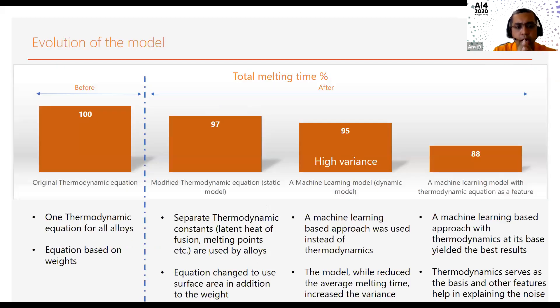This is how our evolution of the model happened. As I mentioned, we started with a thermodynamic equation. This equation was based on weights, and we had a single equation for all the alloys. That was one of the reasons why our predictions were inaccurate. The first thing that we did is we modified the equation to have separate equations for different alloys. At the same time, we incorporated the surface area into the equation in addition to the weight of the molten. That helped us to cut down the total melting time by 3%.